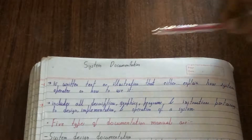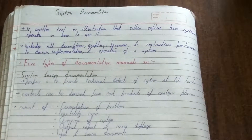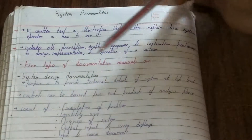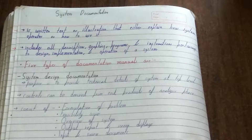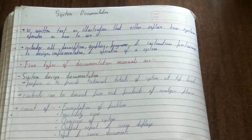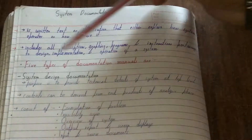It contains all descriptions, graphics, programs, and instructions pertaining to the design, implementation, and operation of a system — every detail related to a particular system. There are five types of documentation manuals. The first is system design documentation, which is basically from the developer's or manufacturer's point of view. Its purpose is to provide technical details of a system at a top level. Before developing or manufacturing a system, you need to analyze the requirements — for a washing machine, you need a dryer, a timer, different wash modes for different kinds of clothes.